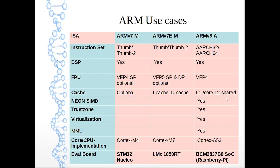L2 cache is shared between cores, and advanced features like NEON SIMD, TrustZone, virtualization, and MMU are available on ARM version 8A. If you need these features, you have to use a device based on ARM version 8A. Example cores: ARM version 7M uses Cortex-M4, ARM version 7EM uses Cortex-M7, and ARM version 8A uses Cortex-A53. The corresponding evaluation boards are the STM32 Nucleo, i.MX1050RT, and Raspberry Pi.